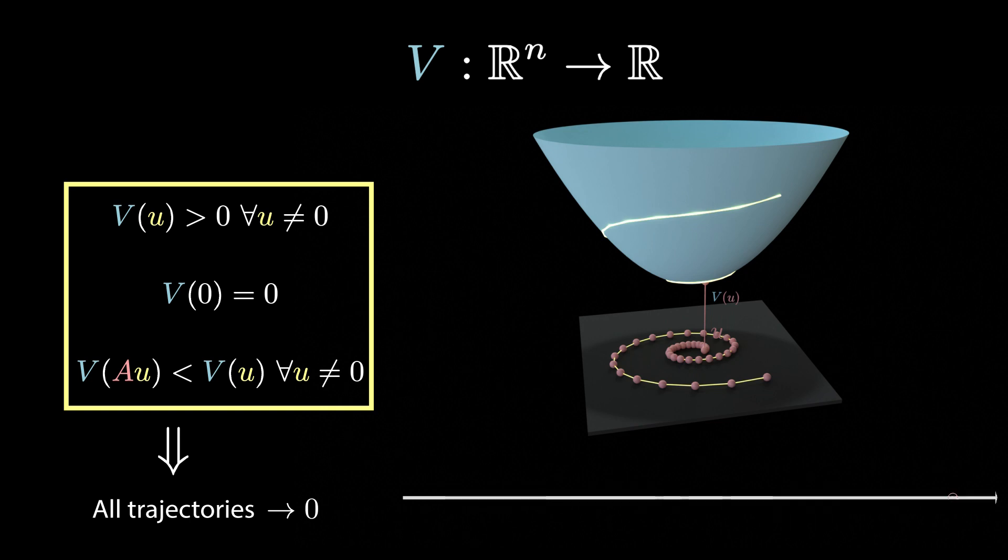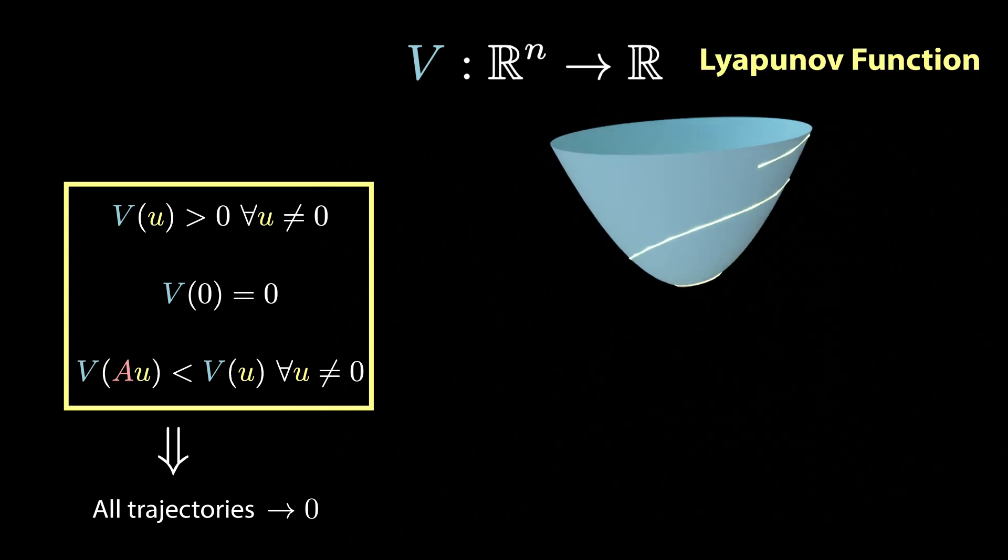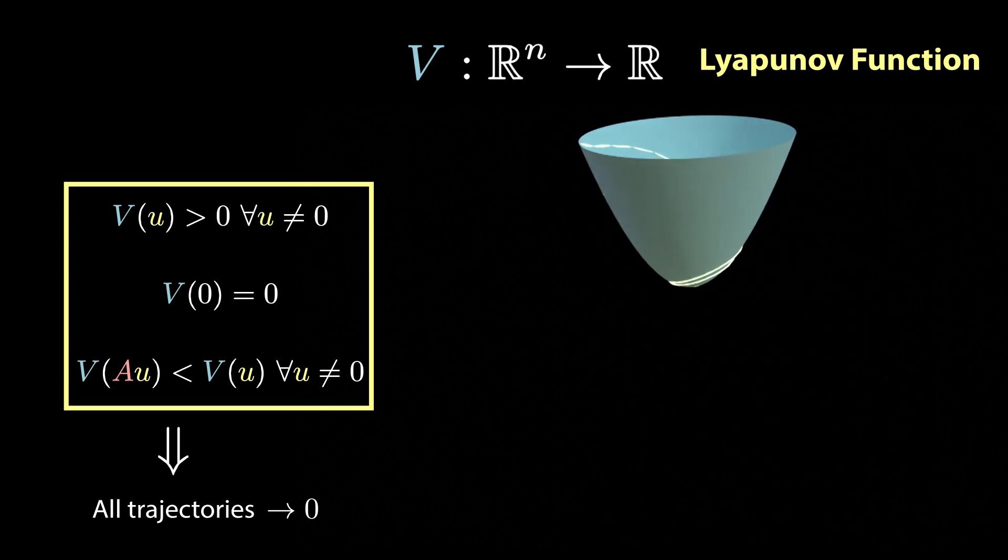Intuitively, this is because if some trajectory did not converge to 0, v of u of t will decrease indefinitely, and eventually it will become negative, which cannot happen because v is not negative by definition. Such a function v is called a Lyapunov function, and you can think of it as some energy associated with a system that decreases along trajectories.